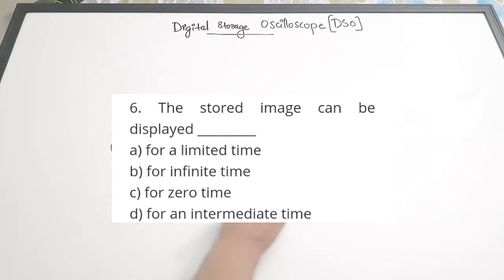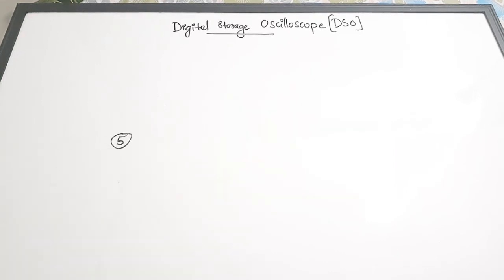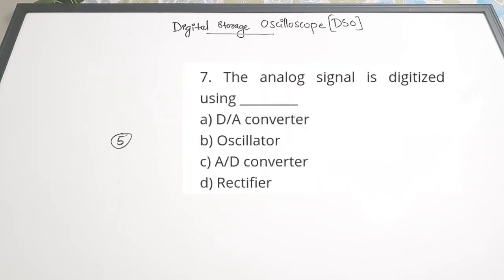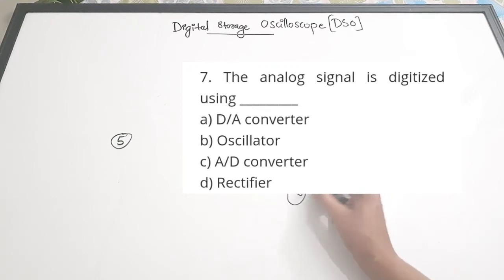Fifth question: The analog signal is digitized using dash. A - D to A converter, B - oscillator, C - A to D converter, D - rectifier. This is a very basic question. We use the analog to digital converter to digitize the signal. Correct answer is C - A to D converter.